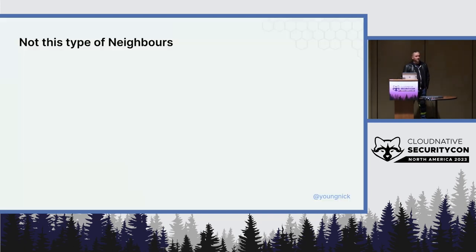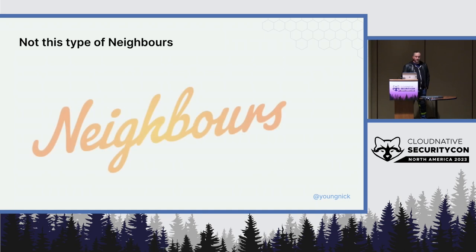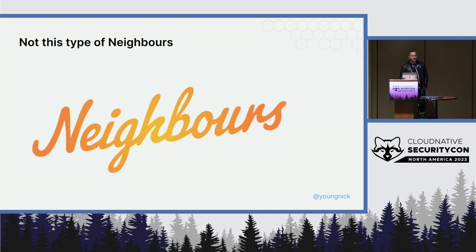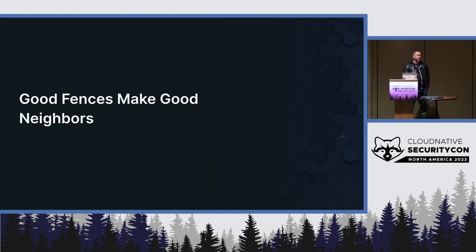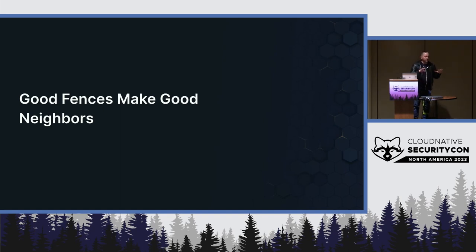As an Australian, I feel like it's quite important that I mention that I'm not talking about this type of Neighbours. Although the theme song tells us that this type of neighbours often become good friends, the TV show is not what I'm talking about today. What I am talking about is the idea for this talk came from this statement that 'Good Fences Make Good Neighbors' is all about the fact that if you're living right next to somebody, you need to have agreements about what happens between the two of you. It's all about agreements and having clear delineation between neighbours is what makes neighbours good friends.